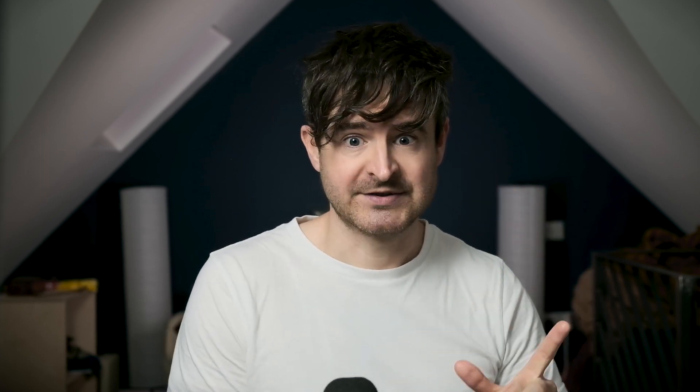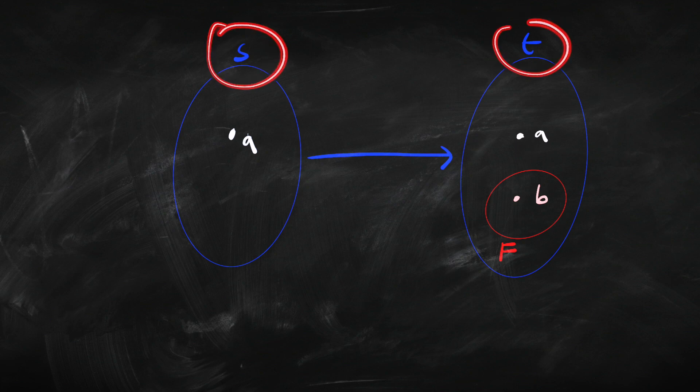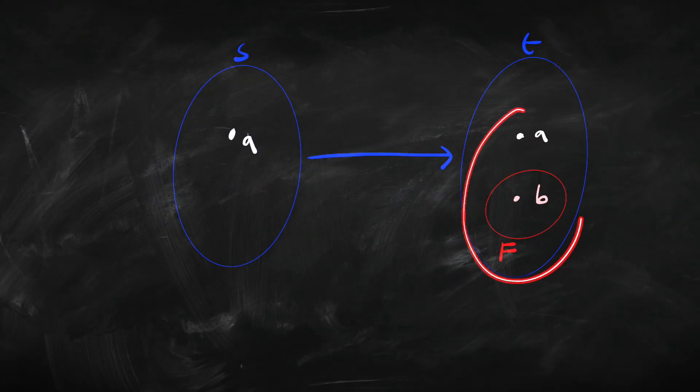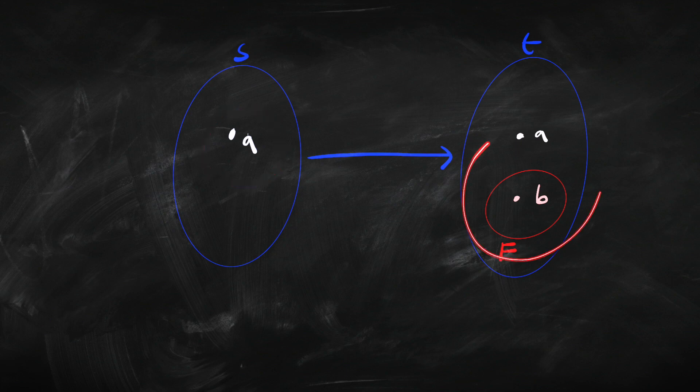We can say similar things about the converse Barcan sentence with a slightly different example. But what I want to focus on is: in what cases is the Barcan sentence valid, and what would a model look like that makes it false? Take a look at this model — it's super simple. We've got two possible worlds, S and T. T is possible relative to S. In world S there's just one thing, A. In world T there are two things, A and B, and B has the property F. Nothing else is F. So this is a variable domain model, not a constant domain model.